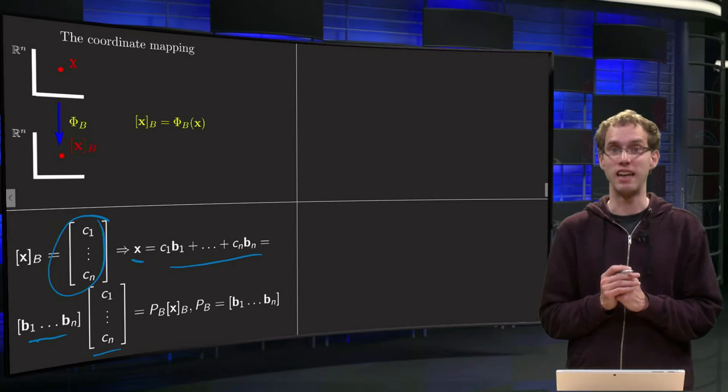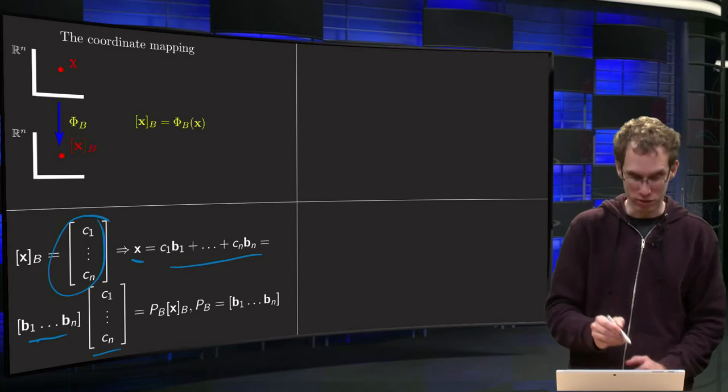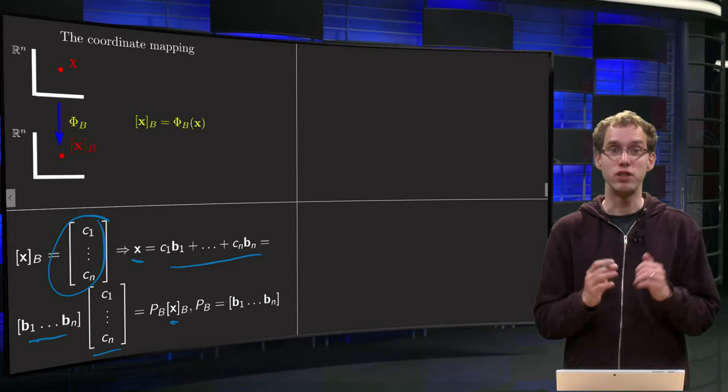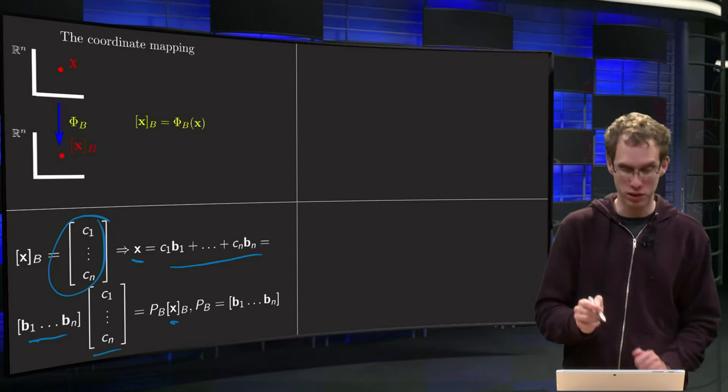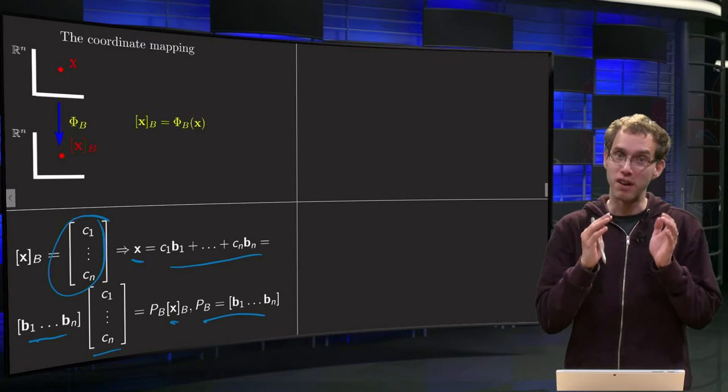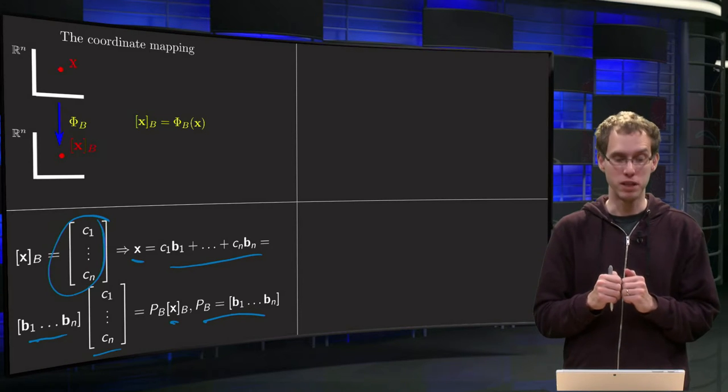And the vector containing c1 up to cn is of course xb. And we will call this matrix with columns b1 up to bn the matrix Pb which tells us how we can find x if we have xb. So x equals Pb times xb.